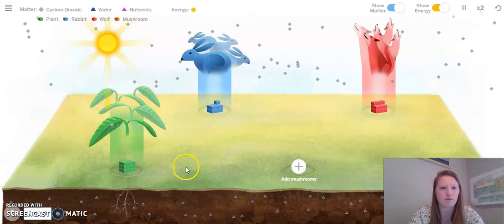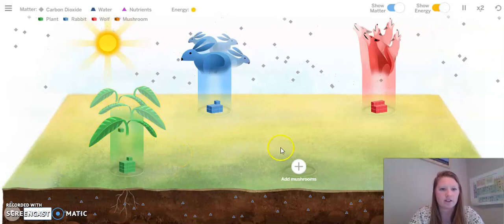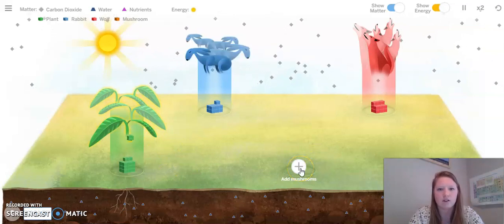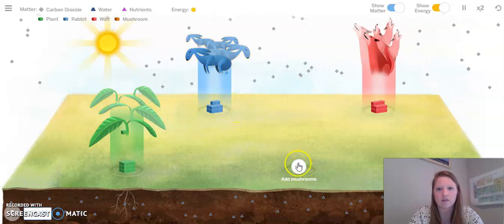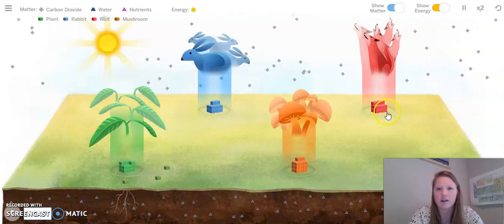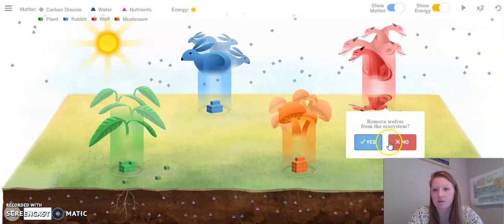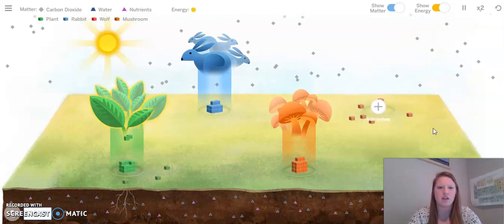It looks like by removing the mushrooms, the plants start to get droopy. It looks like they're starting to die out, and so are the rabbits. Let's add those back and let's see what happens if I remove the wolves from the ecosystem.